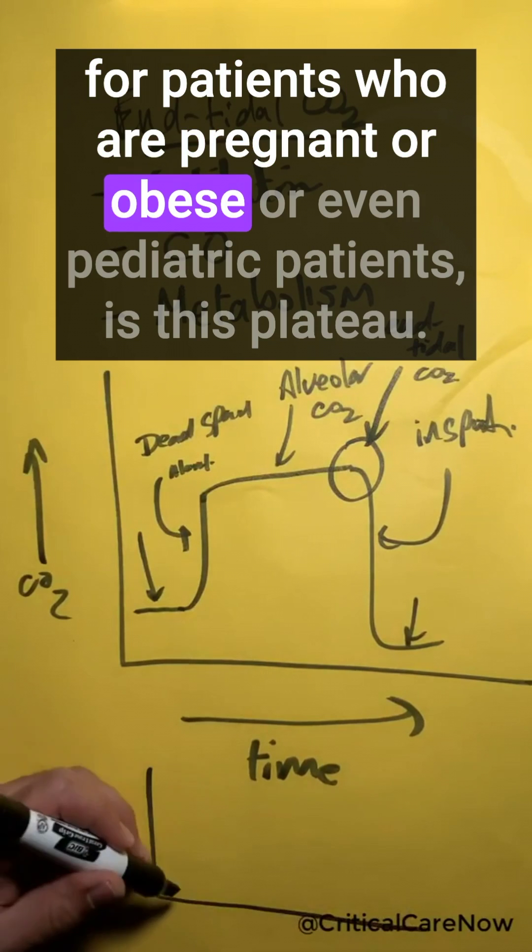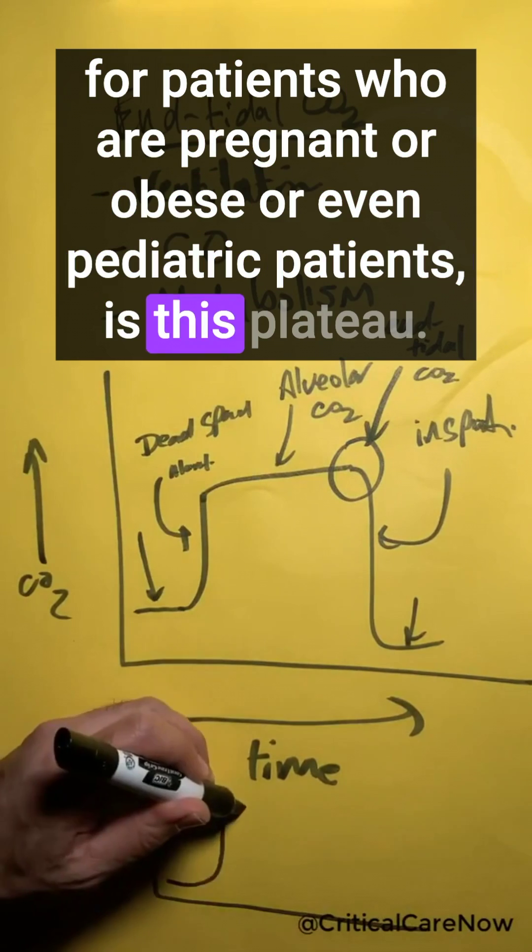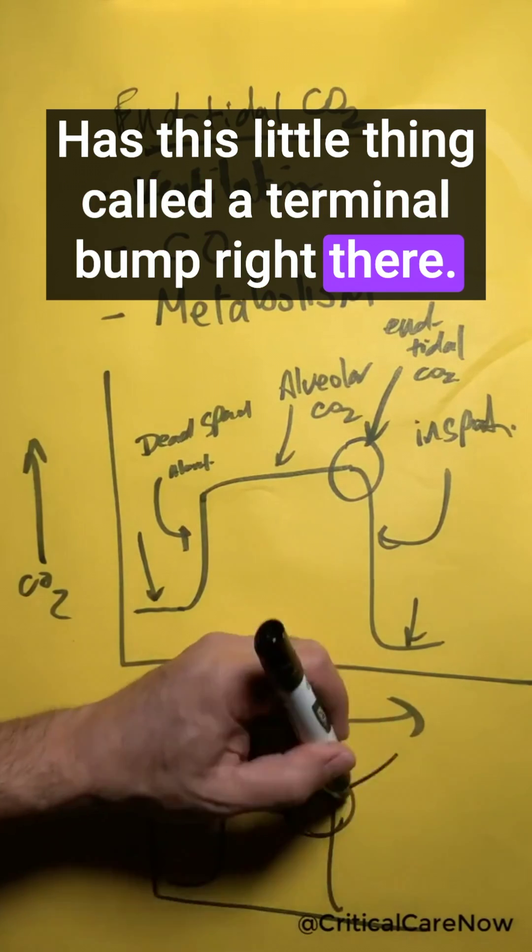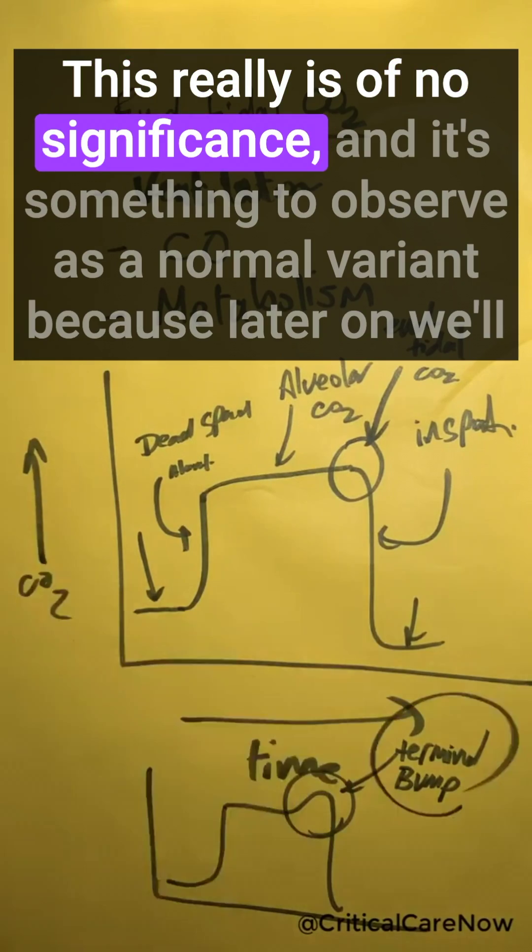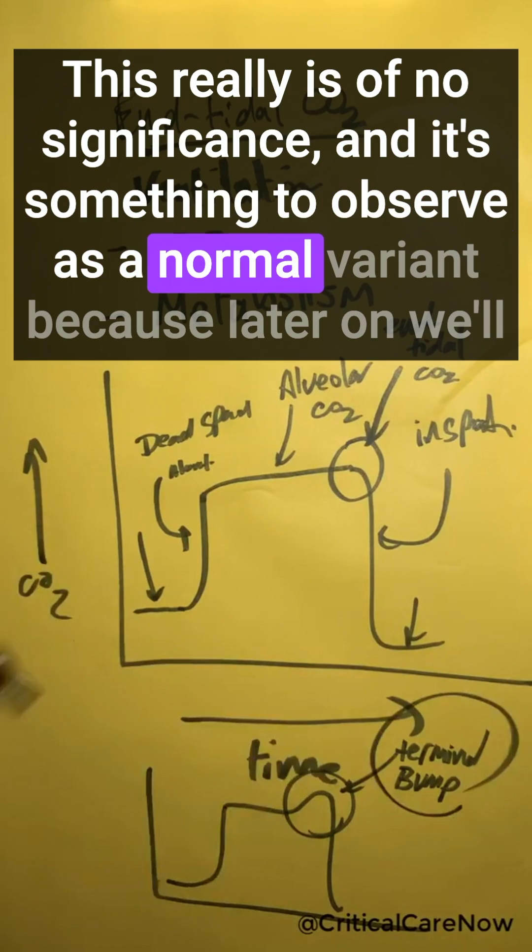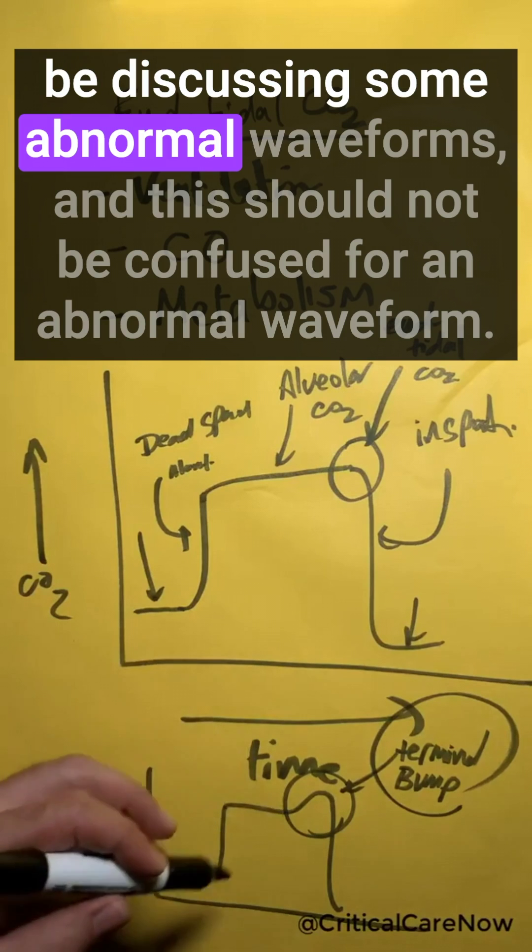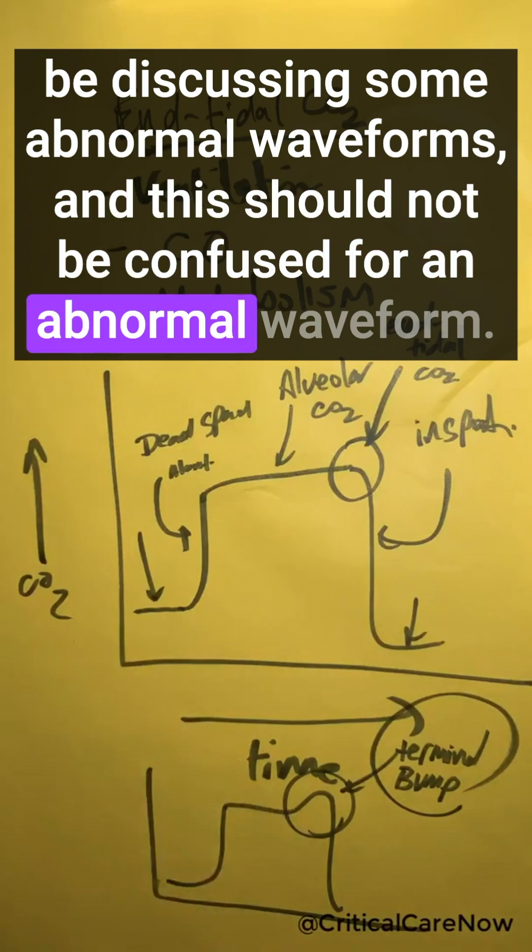For patients who are pregnant or obese or even pediatric patients, this plateau phase has this little thing called a terminal bump right there. This really is of no significance and it's something to observe as a normal variant because later on we'll be discussing some abnormal waveforms and this should not be confused for an abnormal waveform.